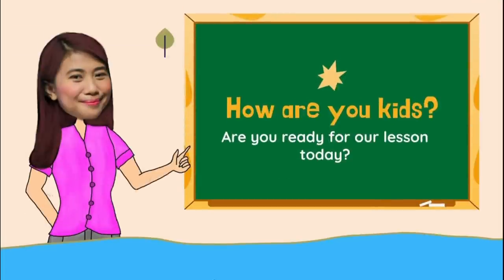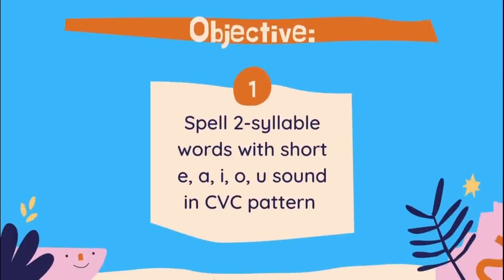How are you, kids? Are you ready for our lesson today? That's great! Our objective: at the end of this lesson, you will be able to spell two-syllable words with short E, A, I, O, U sound in CVC pattern.